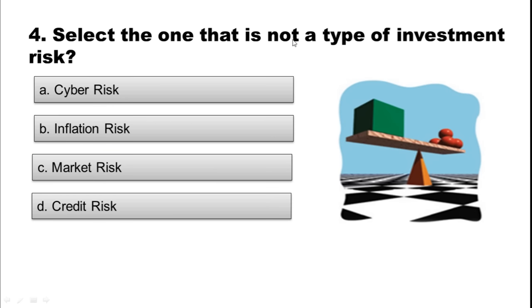Question 4: Select the one that is NOT a type of investment risk. Option A: Cyber risk. Option B: Inflation risk. Option C: Market risk. Option D: Credit risk. The correct option is Option A — cyber risk.